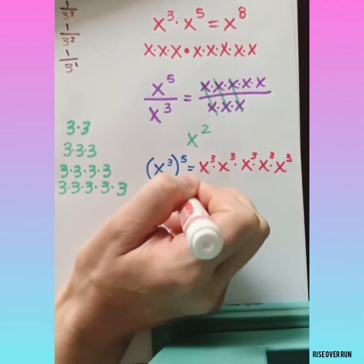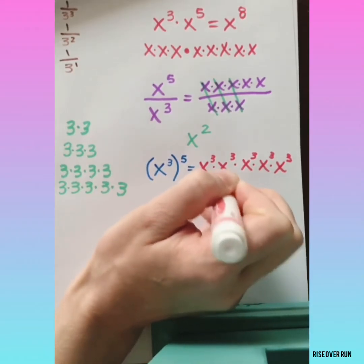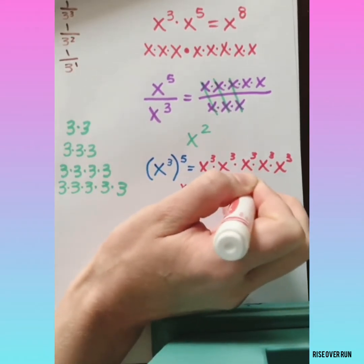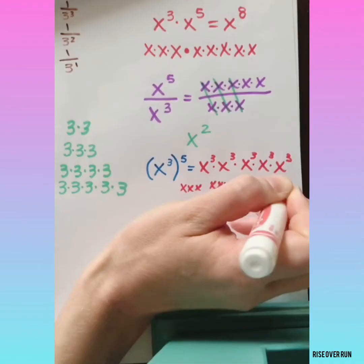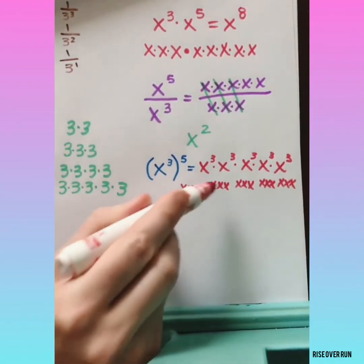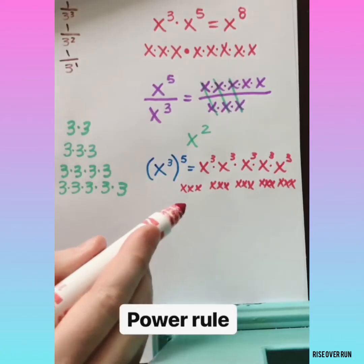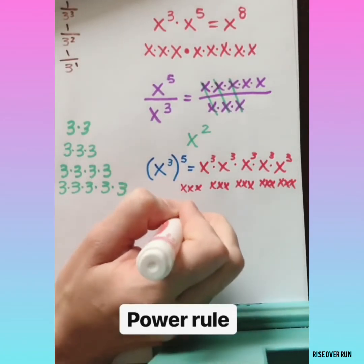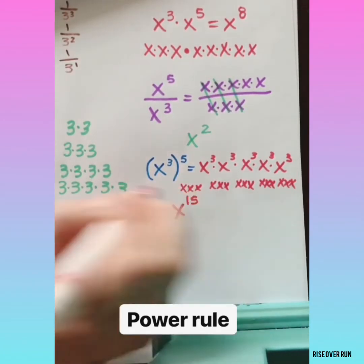Let's expand that again. Each of these is 3x's. So now we can see how many x's are multiplying there. We have 15, so that's x to the 15th power.